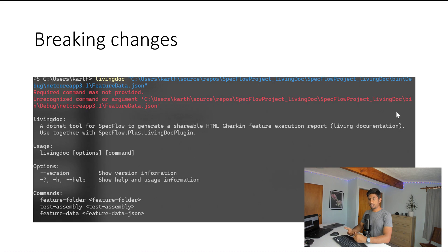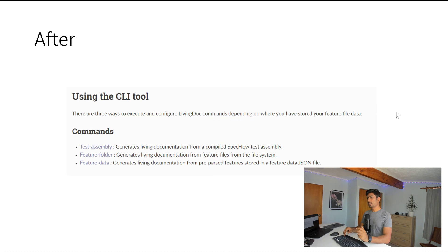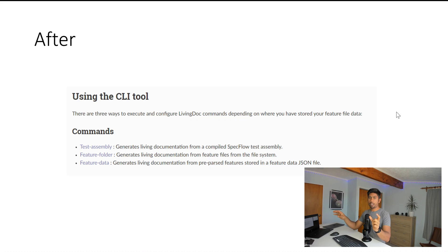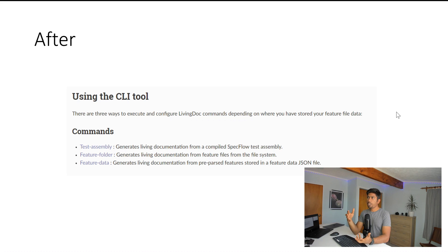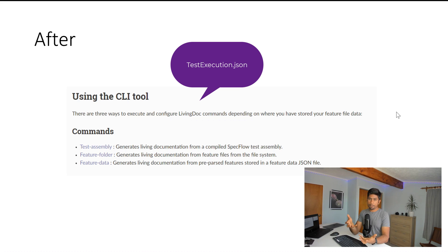With the updated CLI, three new commands are introduced: test-assembly, feature-folder, and feature-data. You now need to explicitly specify feature-data and the test assembly you're executing. The team has also stopped using the feature-data JSON file and replaced it with a file called test-execution.json. This new file maps with your assembly file to include test results.